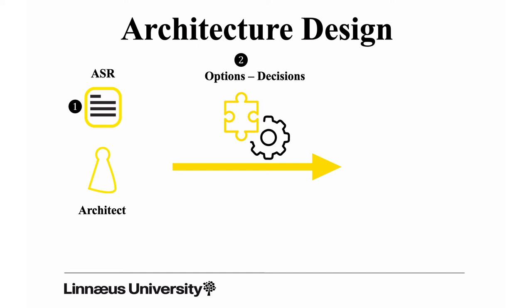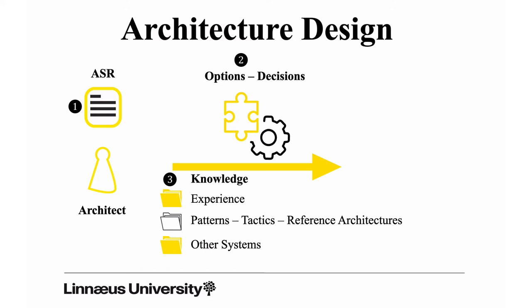Where do you find these options? Knowledge comes in different formats. The most obvious one is the architect's own experience — they have been in the business for quite some time, learned from successes and failures, and know what used to work and what didn't. Besides this internal knowledge, there is externalized knowledge that others have written down in books, papers, and different formats — and in this class you find patterns, tactics, and reference architectures.